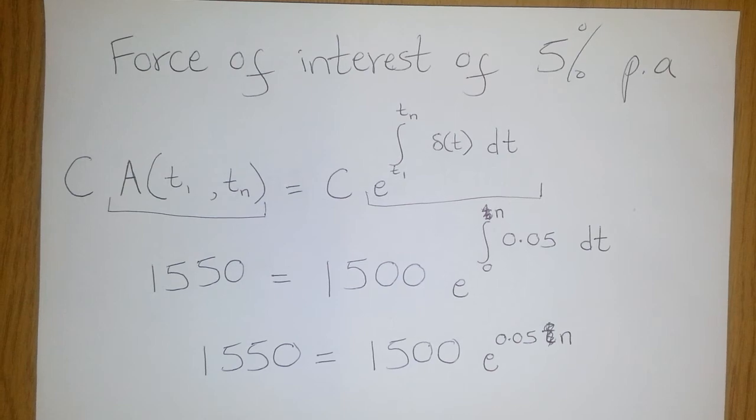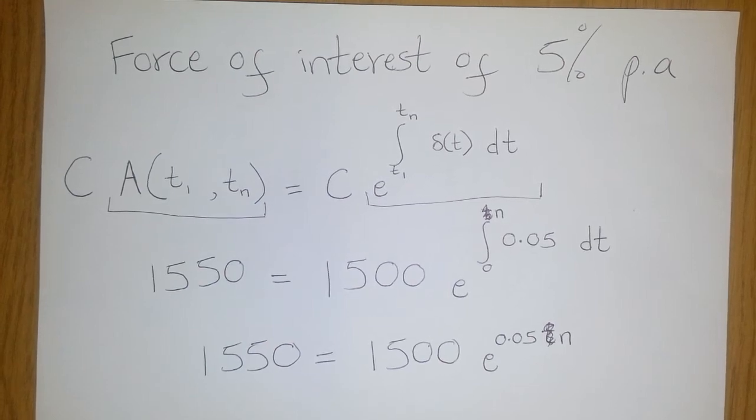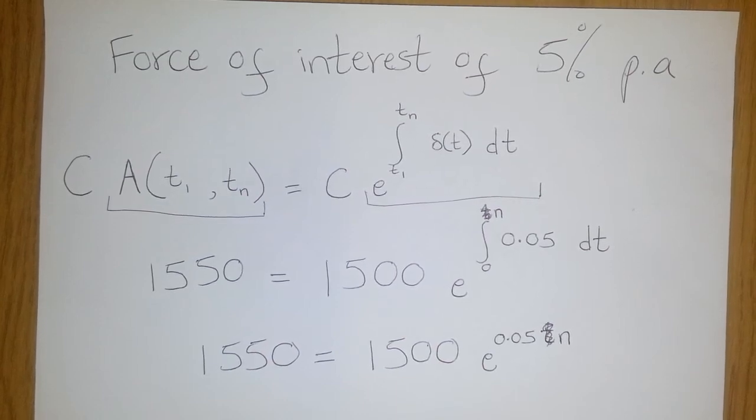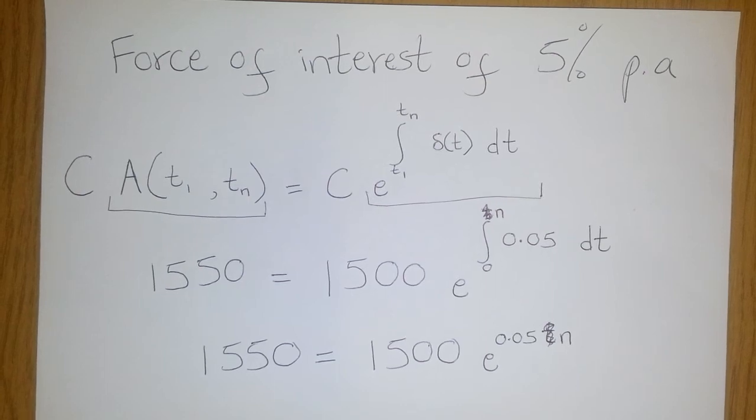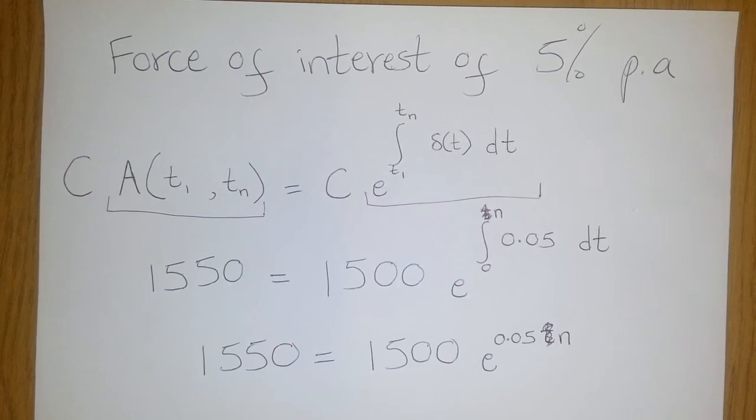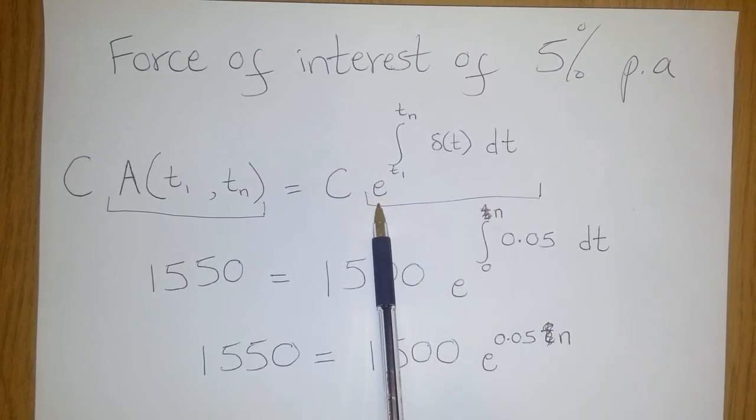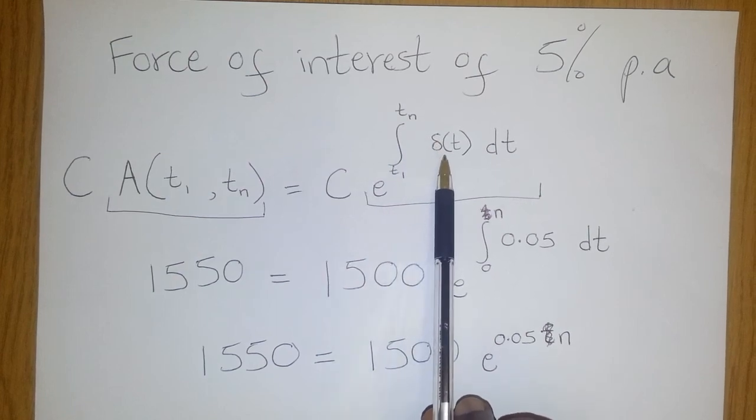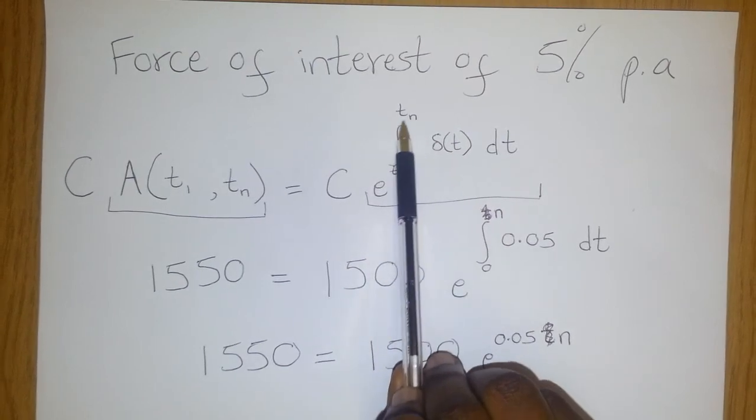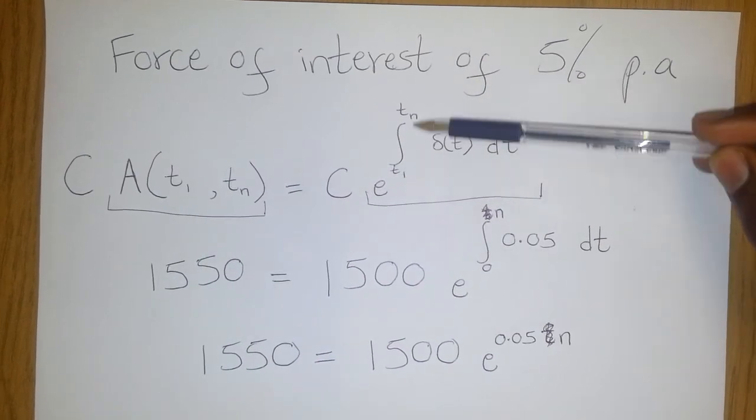In our example here, if we take 1500 and multiply it by a certain accumulation factor, it should give us 1550. In the case of force of interest, your accumulation factor takes the form of an exponential of a certain integral, which is basically an integral of the force of interest over the period in question. Here the period in question is time t₁ to tₙ, so the integral is over time t₁ to tₙ.